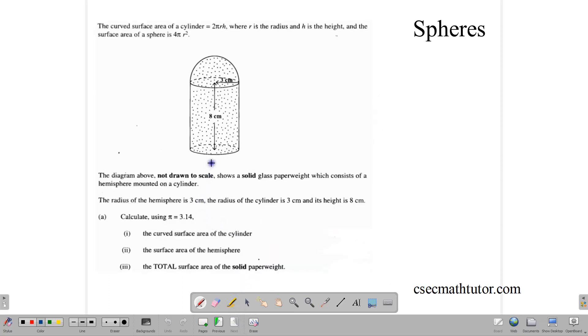Here, we have a diagram, the curved surface area of a cylinder is given, and we are told in the question that the surface area of a sphere is 4πr². Now, this is our shape, and we are being asked to do some calculations, using pi as 3.14.